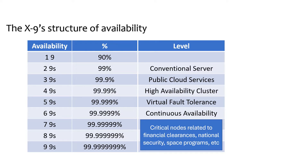One nine is 90% availability. Two nines means 99% availability, which is generally used for conventional servers. Three nines means 99.9% availability, which is generally used for public cloud services. Four nines is 99.99%, which is generally used for high availability.